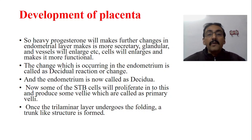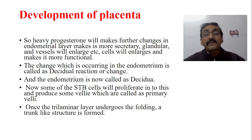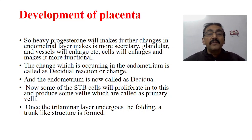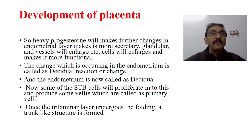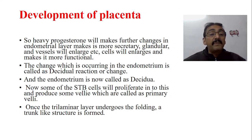Once decidual changes start, the uterine endometrium is no longer called the uterine endometrium — it is now called the decidua. Some cells of the syncytiotrophoblast proliferate and produce streaks projecting toward the center. These projections are called primary villi.